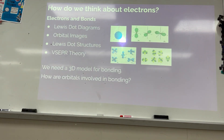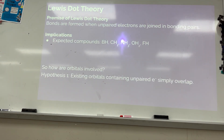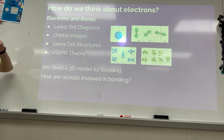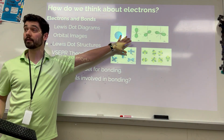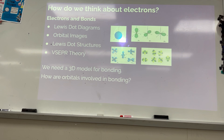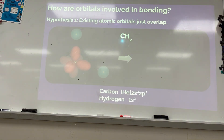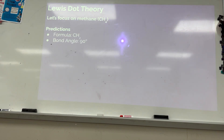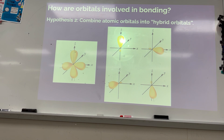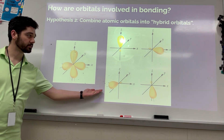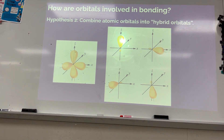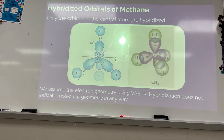Speed review: valence bond theory was us trying to reconcile the orbitals we learned about from atomic structure with making chemical bonds. If we just take orbitals and try to overlap them as they are, we can make some predictions about chemical bonds, but they give us incorrect predictions — wrong bond angles, wrong number of bonds. So we had to come up with new orbitals called hybrids, which we get by mathematically combining the original orbitals.